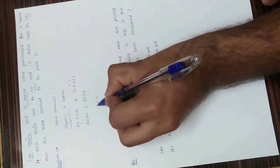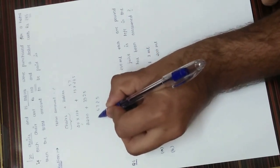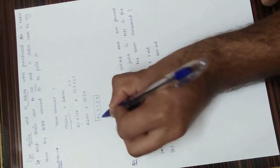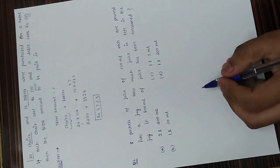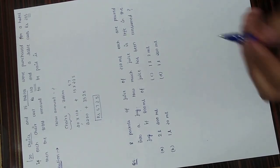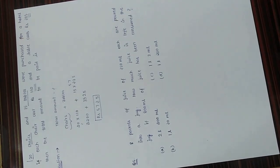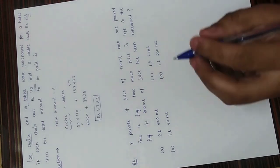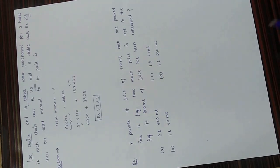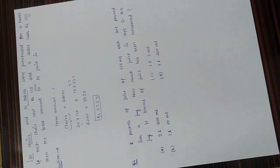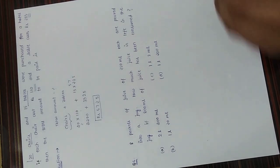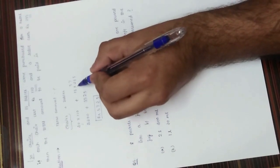Adding these together: 2200 + 3525 = 5725, so the total price that needs to be paid is 5725. This is a very standard question common in Olympiads — sometimes it is modified with pencils, pens, or erasers, where a unit price and total number of items are given and we calculate the total cost.